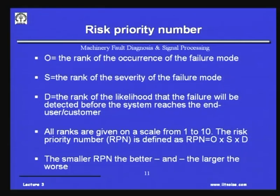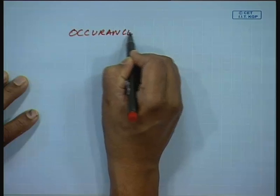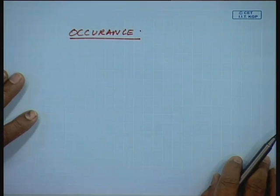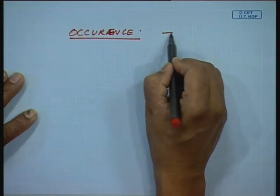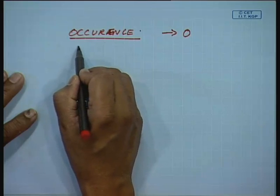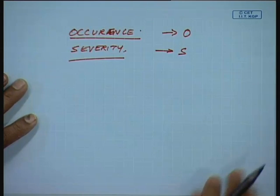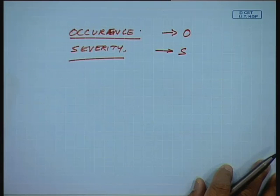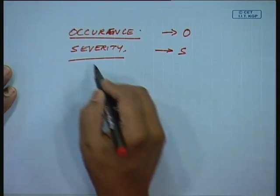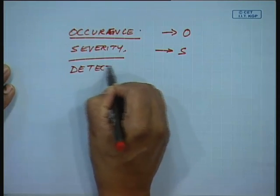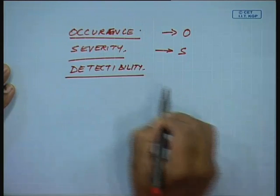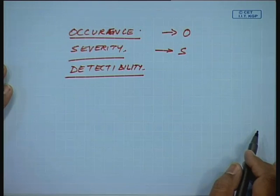The RPN number is the most important output from FEMICA. This RPN number depends on three parameters. One is O — the rank of occurrence of the failure mode, meaning how frequently this system is going to fail. Another is S — the severity of the failure. If there is a failure in this component, how severe is it? Is it going to affect other components in the process?